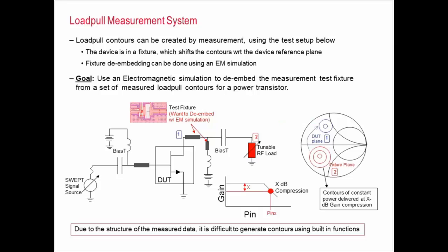There's a lot of ways to do fixture de-embedding. I think one good way, if you know what your test fixture looks like and you know what the substrate is, is to do an EM simulation. That's a really nice way to de-embed your test fixture. The goal today is to use an electromagnetic simulation to de-embed the measurement test fixture from this set of measured load pull contours for power transistors. This might seem easy enough, but actually once we start digging into it a little bit, I realized that due to the structure of the measured data, it's really difficult to generate contours in the simulation environment. The measured data comes in a very different format than we're used to dealing with in simulation. If we try to just use the contour function that we have in the simulation, it's not going to work very well.